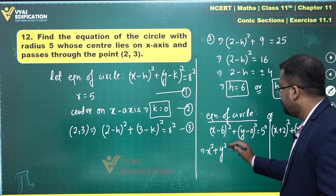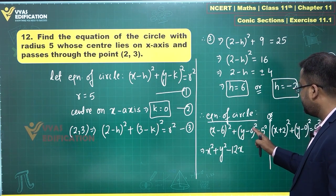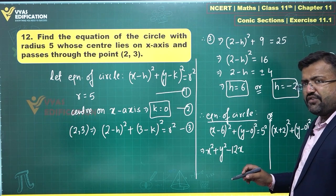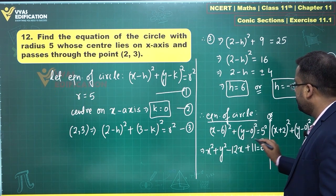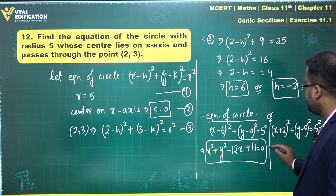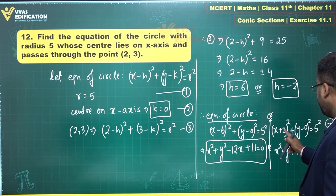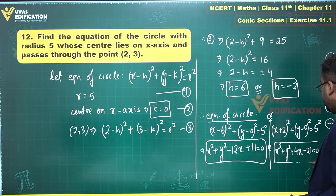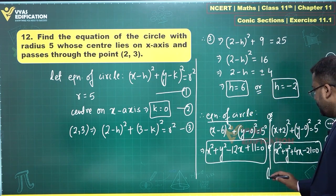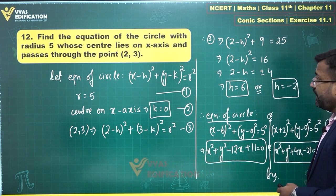Simplifying the first: x squared plus y squared minus 12x plus 36 minus 25 equals 0, which gives x squared plus y squared minus 12x plus 11 equals 0. Simplifying the second: x squared plus y squared plus 4x plus 4 minus 25 equals 0, giving x squared plus y squared plus 4x minus 21 equals 0. Those are the final answers for this twelfth question.